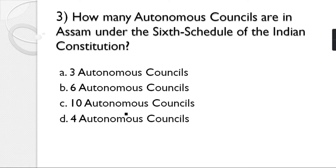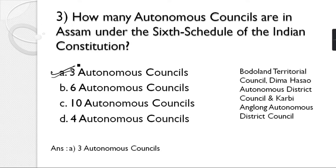Question number 3: How many autonomous councils are in Assam under the Sixth Schedule of the Indian Constitution? Options: 3, 6, 10, or 4 autonomous councils. The correct answer is option A — 3 autonomous councils: Bodoland Territorial Council, Dima Hasao Autonomous District Council, and Karbi Anglong Autonomous District Council.